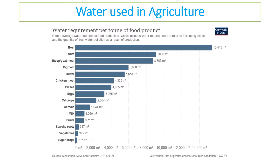Think about it like this: in a food chain, plants are eaten by animals, and the plants need water to grow — they need irrigation. The worst water requirements come from beef, and nuts also need a lot of water, whereas other products use much less. One way to look at sustainable food production is to consider how much water each food requires — for example, changing from beef to chicken if you're a meat eater would save a huge amount of water.